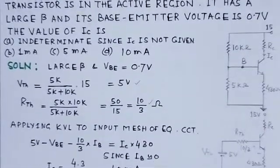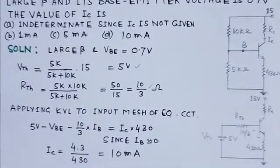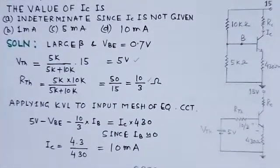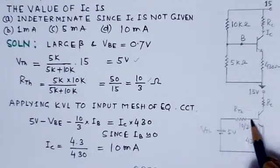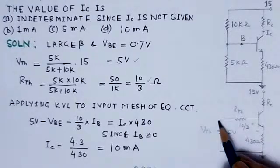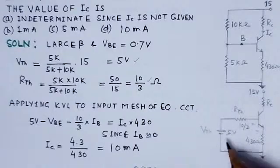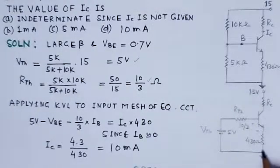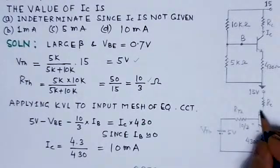This gives us RTH equal to 10/3 kΩ, which serves as the Thevenin's equivalent input resistor.